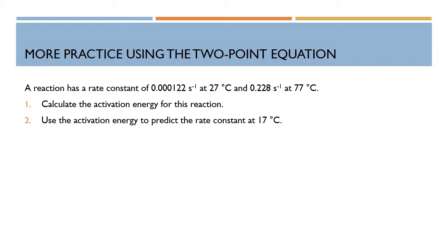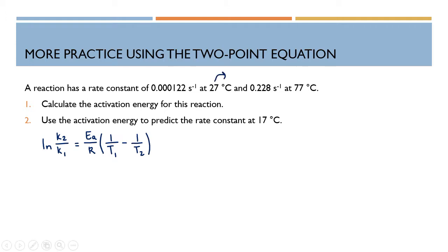Now we're going to practice using the two-point equation. We have a reaction with a rate constant of 0.000122 per second at 27 degrees Celsius, and a rate constant of 0.228 per second at 77 degrees Celsius. What is the activation energy for this reaction?